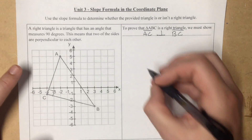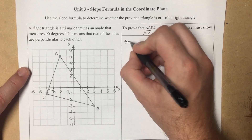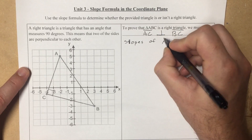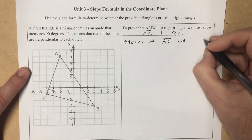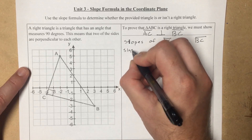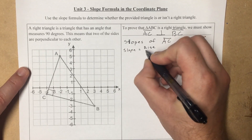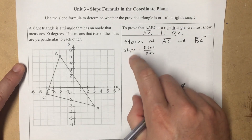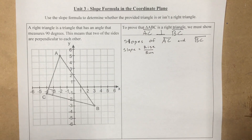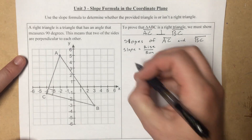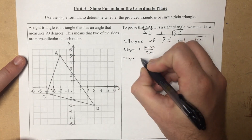What we need to find is the slopes of line segment AC and line segment BC. Recall that slope is equal to rise over run. We'll find the slopes and then go over a rule that comes up when two lines are perpendicular.